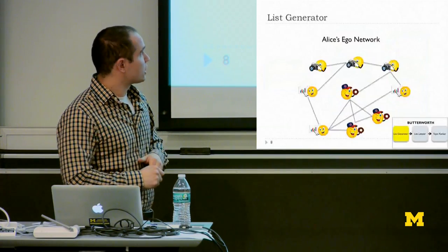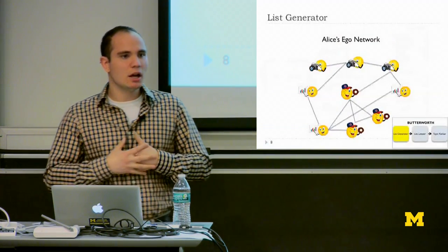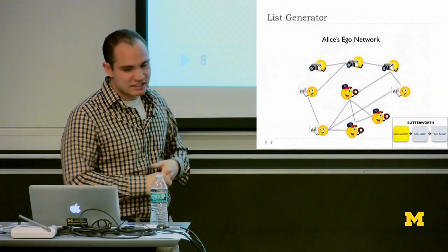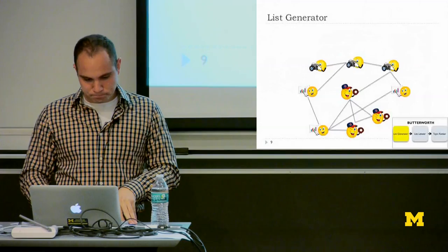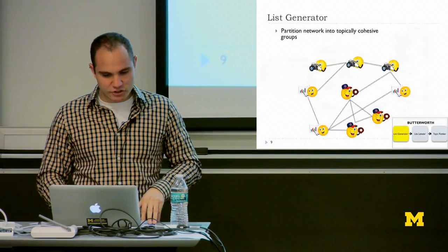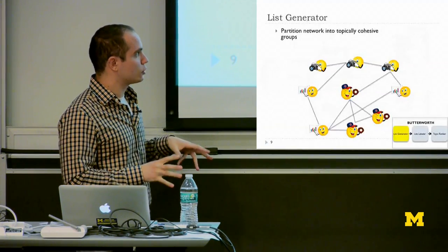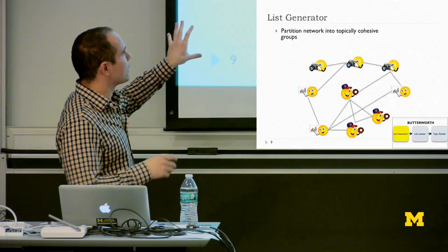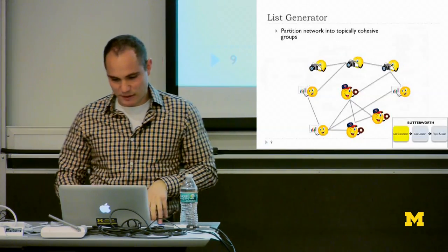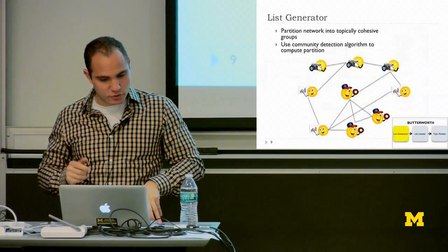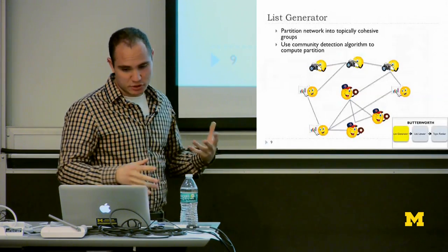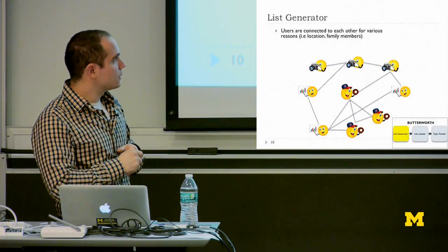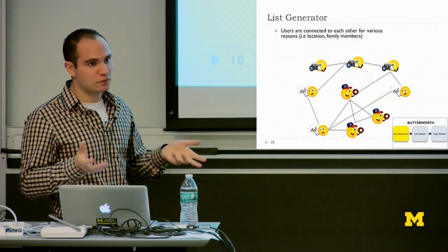For list generation, we take a user's social network — specifically Alice's ego network, which consists of all of her friends and the connections between them — and partition this network into topically coherent groups, ideally separating her science friends, baseball friends, and photography friends. Our approach uses a community detection algorithm to make this partition. One problem is that the underlying friendship network has people connecting for a variety of reasons, not just topical ones — friends from real life, family, location, affiliated organizations — so the network structure may not produce topical lists and may create spurious lists.